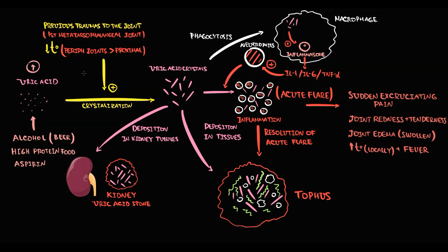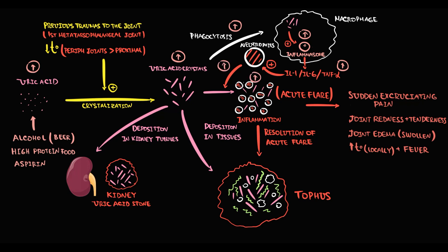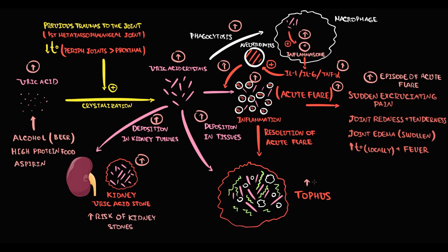Alcohol, especially beer, high-protein food, and acids such as aspirin cause increasing uric acid levels. With increasing uric acid, the amount of uric acid crystals increases. The higher the amount of crystals, the greater the chance of inflammasome activation and massive cytokine production. The higher the amount of pro-inflammatory cytokines, the more neutrophils enter the joint and the more severe the inflammation. In the chronic phase, higher crystal amounts also increase the risk of kidney stones and tophus formation.